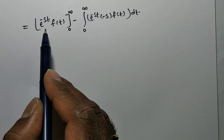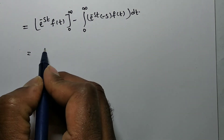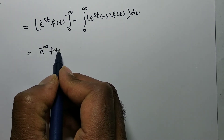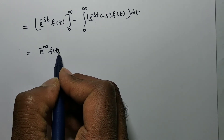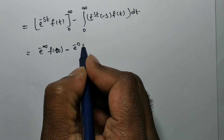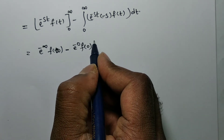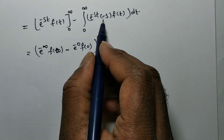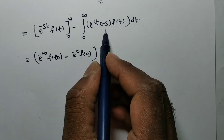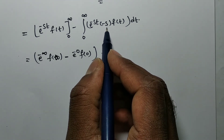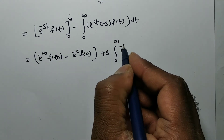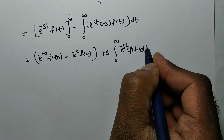Substituting the limits: at the upper limit, e^(-∞)·f(∞) minus at the lower limit, e^0·f(0). For the remaining integral, differentiating e^(-st) with respect to t gives (-s), so we can take out (-s), giving plus s·integral from 0 to infinity of e^(-st)·f(t) dt.